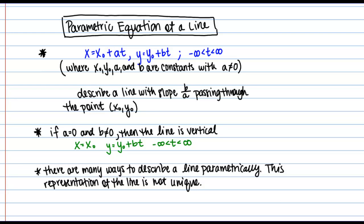That's the main idea. There are a few other important notes. If A equals zero and B is not equal to zero, then we have a vertical line.